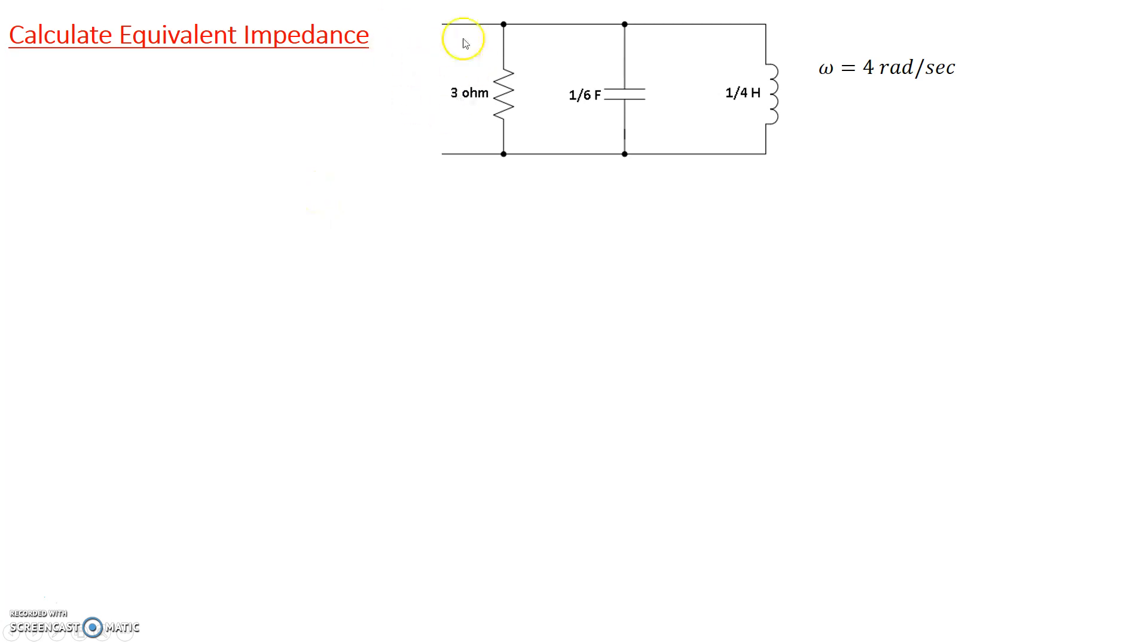First step: the impedance of the 3 ohm resistor is basically 3 ohms. Capacitor impedance is given by 1 over j omega C. 1 over j can also be written as negative j, so this is negative j over omega C. Omega is 4 and C is 1/6, so we end up with the impedance of the capacitor as negative j 3/2, or negative j 1.5 ohms.